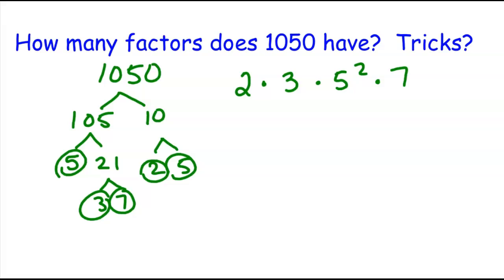If 2 times 3 times 5 squared times 7 multiplies to equal 1,050, any combination of these could be a factor. So we could have a 2 times a 3, which means 6 would be one of the factors. We could have a 3 times a 5 times a 7. That would be one of the factors, 105.